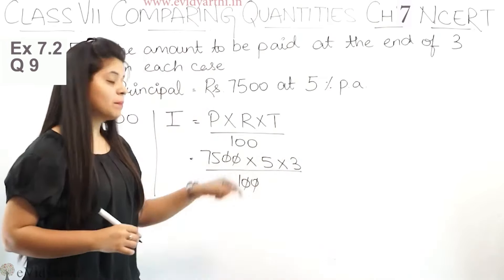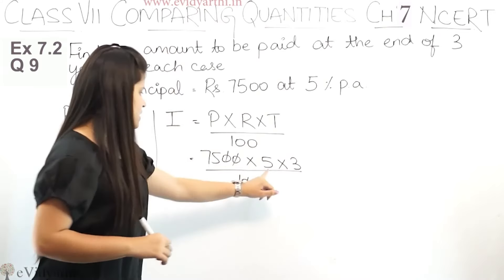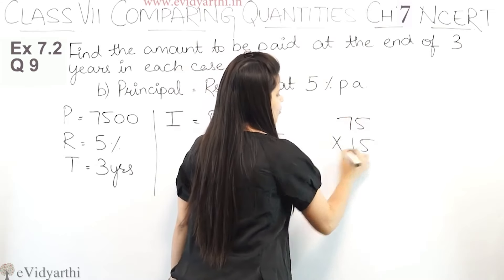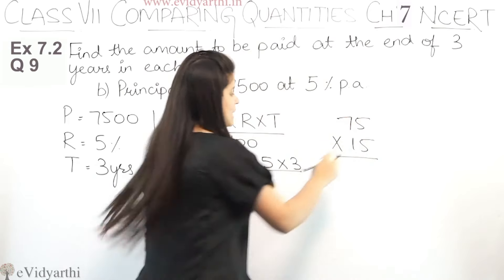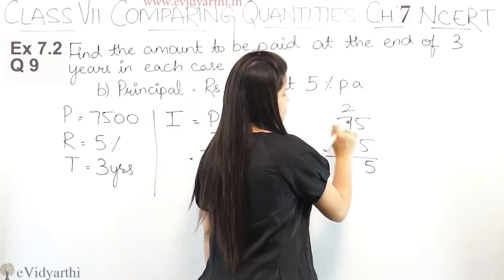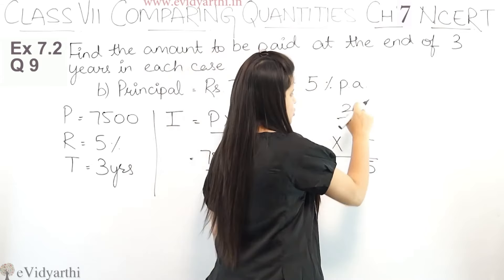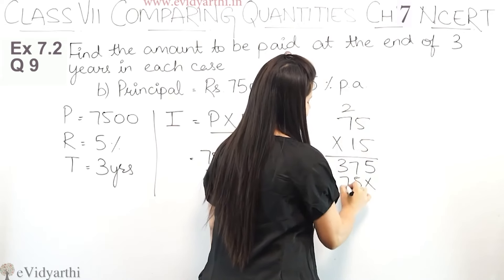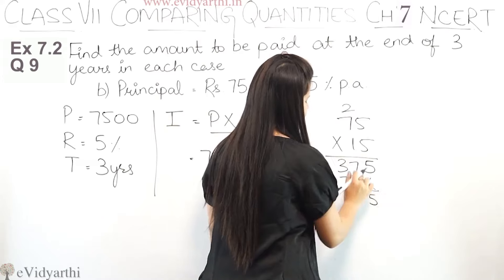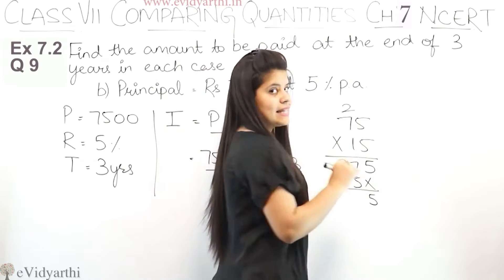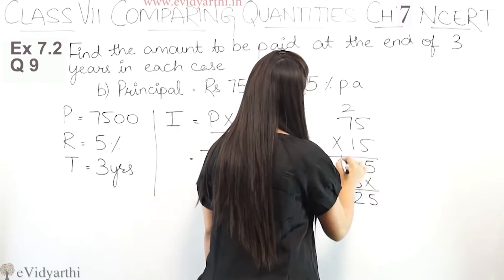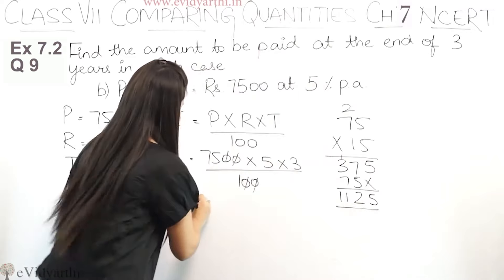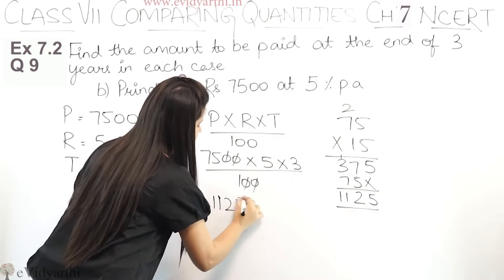So we cut this and we have to multiply it. And so this is 5 times 3 is 15. 75 multiply by 15. So 5 into 5 is 25, 5 into 7 is 35 plus 2 is 37. And this will be 1 into 5 is 5, 1 into 7 is 7. So 5, 7 plus 5 is 7, 8, 9, 10, 11, 12. So we get 1125.